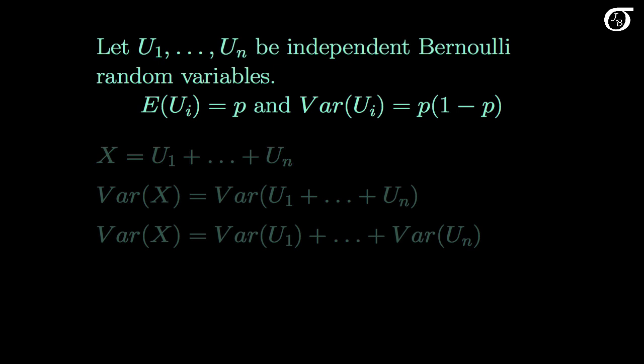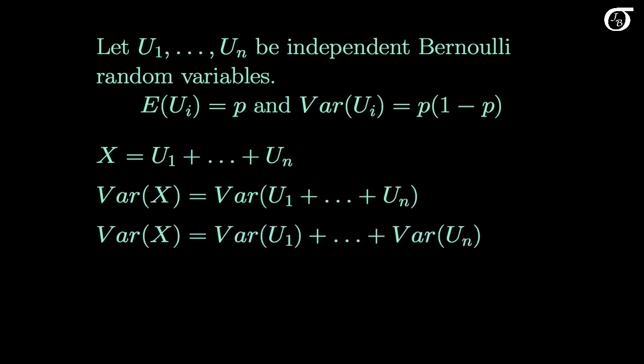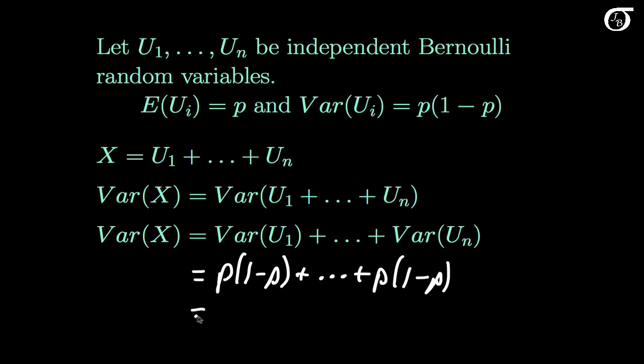For the variance we're going to use similar logic. Our binomial random variable x is the sum of these n Bernoulli random variables, and the variance of x is the variance of the sum of these n independent Bernoulli random variables. When random variables are independent, the variance of the sum is the sum of the variances. Each one has a variance of p times (1-p), and so we are adding up p times (1-p) n times, giving overall a variance of n times p times (1-p). But here we didn't really start from scratch — we started with knowing the mean and variance of a Bernoulli random variable.